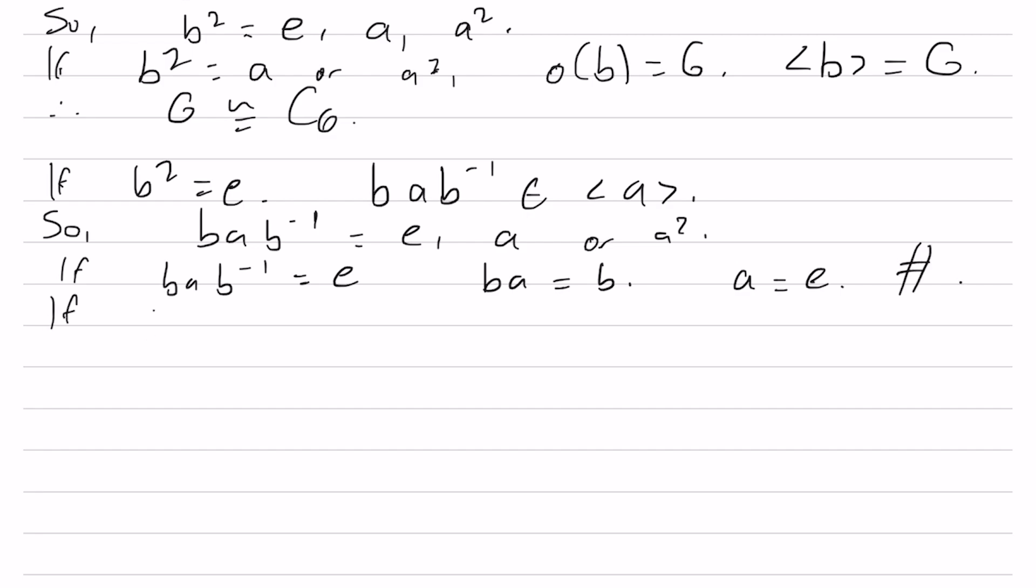So if BAB inverse is equal to A, then BA equals AB. Since these elements commute, the order of AB is going to be the lowest common multiple of the order of A and the order of B, which is going to be 6. So again, we have an element of order 6, and we've seen this before, so we know it's the same logic. It must be the cyclic group of order 6.